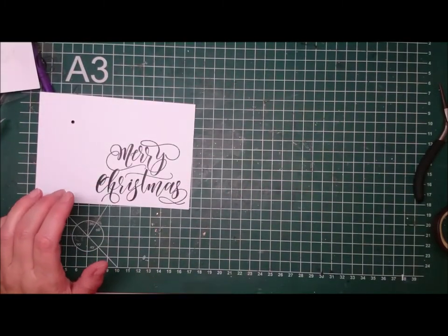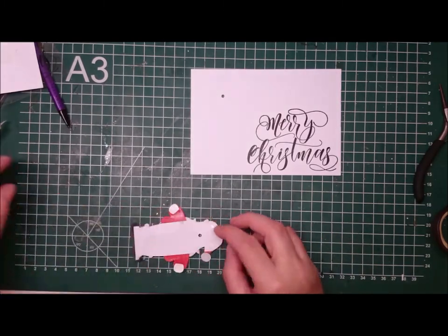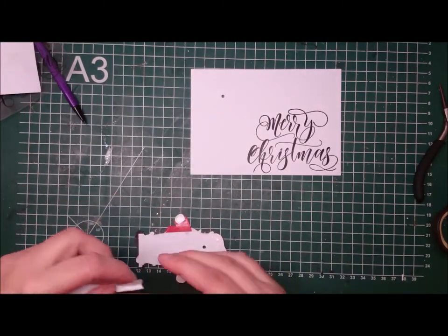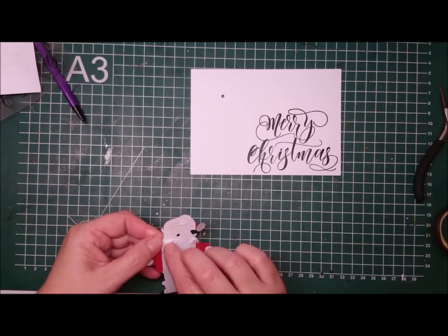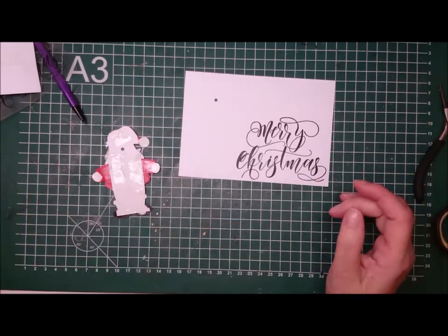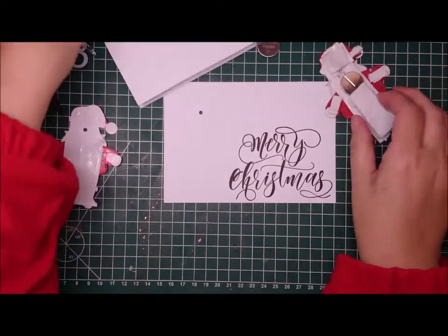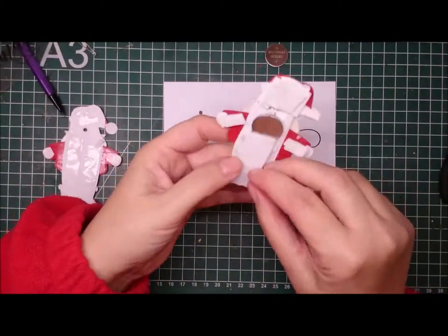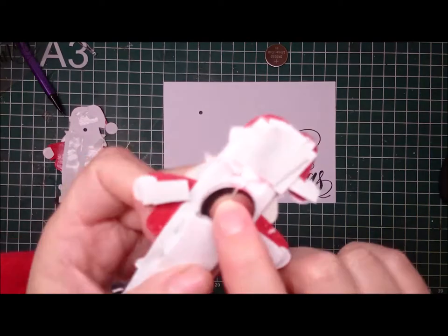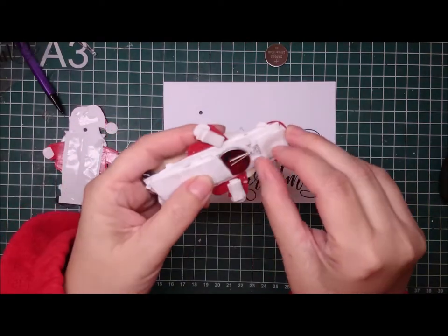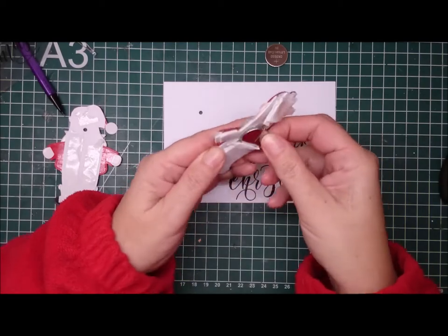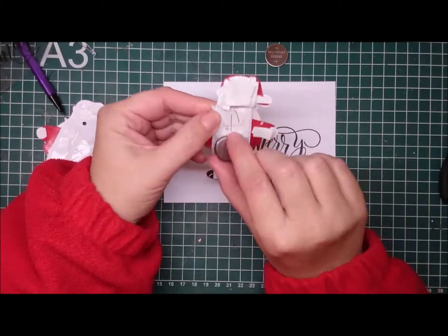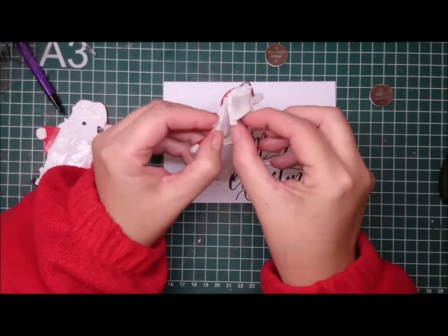So this is Simon Says Stamp Merry Christmas, if you're interested. It's still available, but you can use any stamp that you have, of course. Now, I'm sticking Santa on top of the card with the tape, double-sided tape. See here, I destroyed it. I've put him in the back. And it just fits, but it's just so fiddly and horrible looking on the sides. I don't like it.